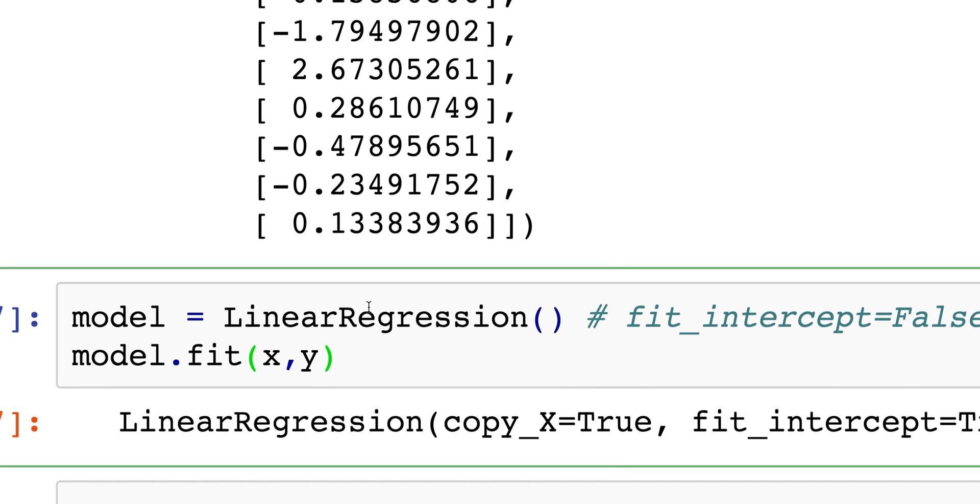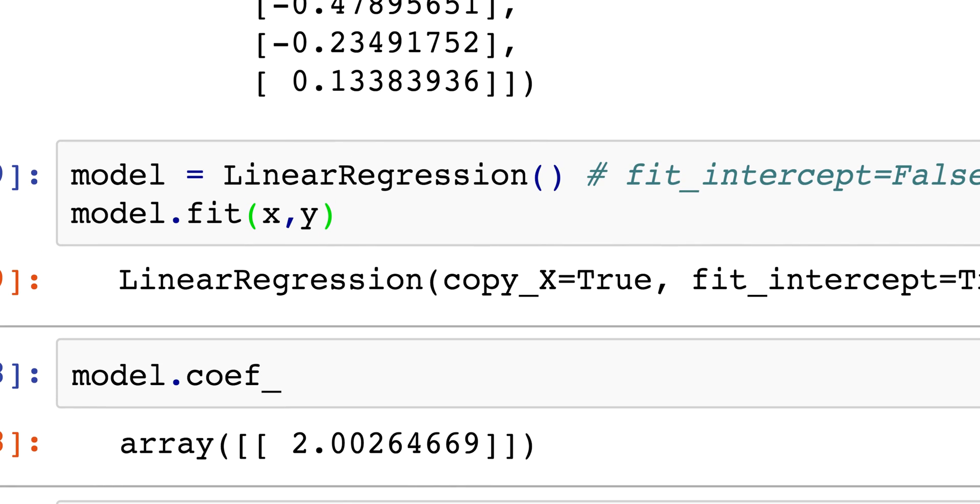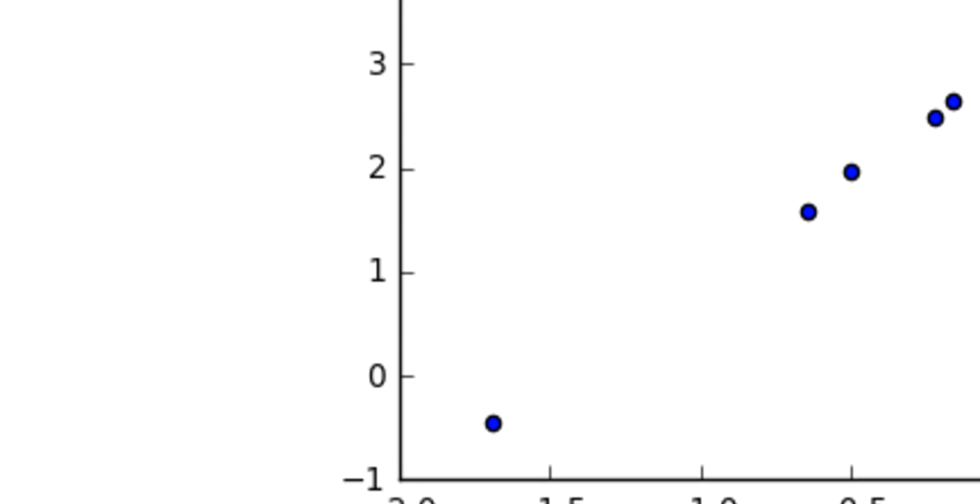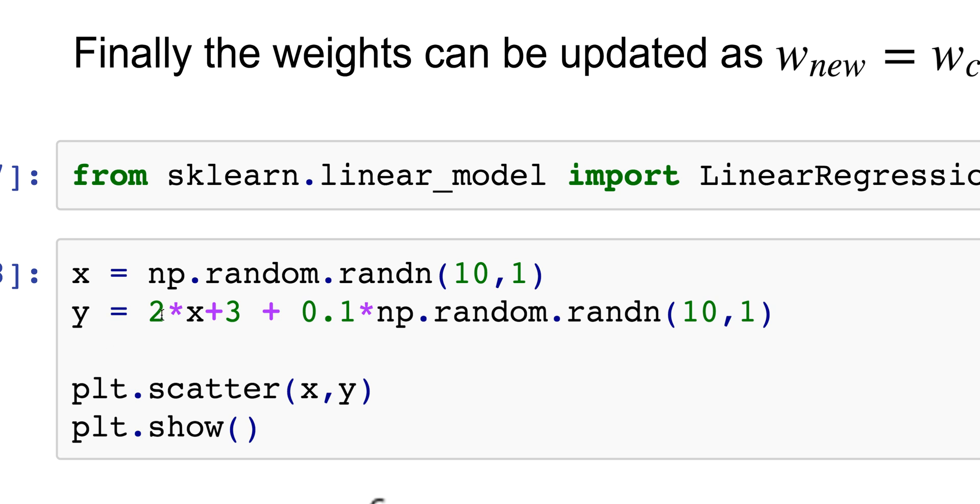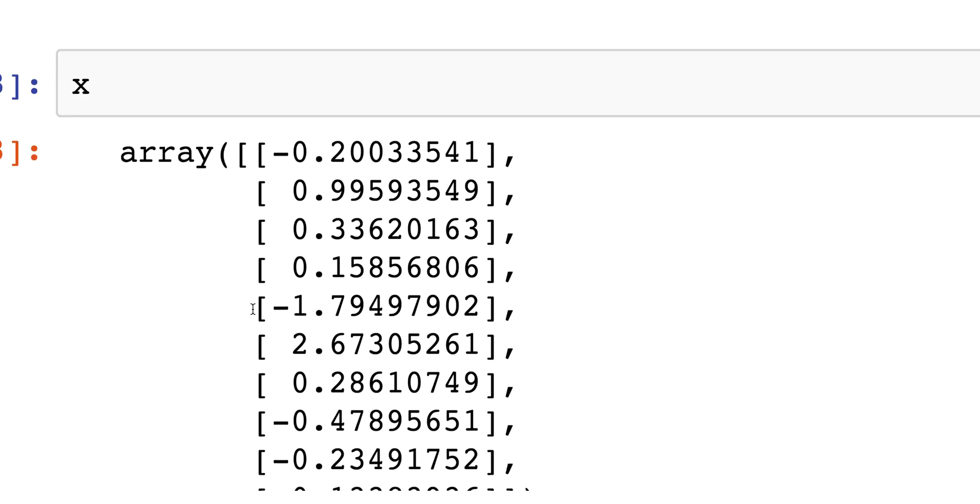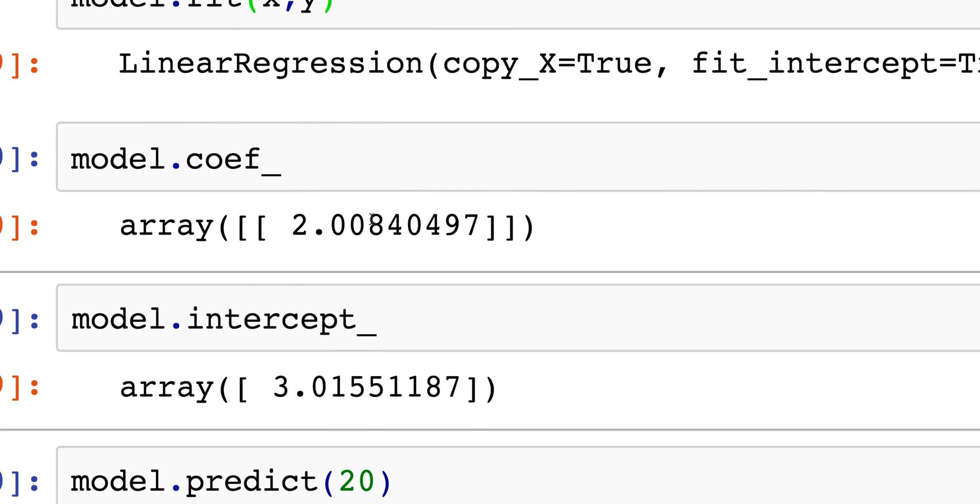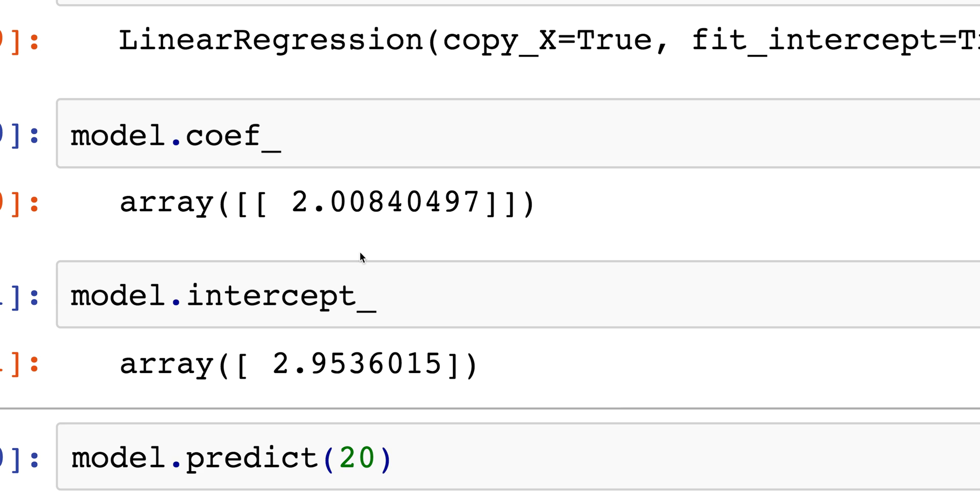I will fit my x and y and let's just explore the coefficients that we get. Keep in mind that the true model is 2 times x plus 3, so I expect my coefficient to be somewhere near 2. Once I spit it out I get 2.008 - that's pretty good. And then the intercept is 2.95, again pretty close to 3.